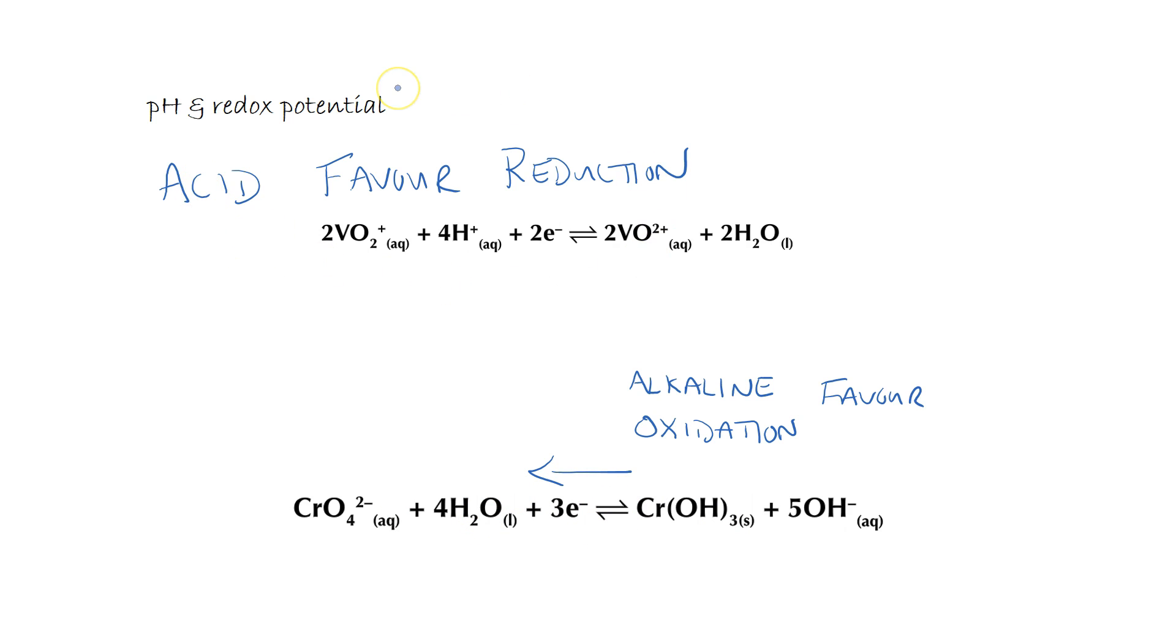OH- is sometimes a by-product of a reduction reaction, and therefore we can also see the reverse process: that oxidation is often favoured in alkaline conditions. If we increased the concentration of our hydroxide species, we would shift the equilibrium to the left and form more of the oxidised species. So the pH will have an effect on the redox potential, but not all the time. This is only a general rule.